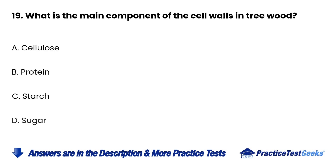Question 19: What is the main component of the cell walls in tree wood? a. Cellulose. b. Protein. c. Starch. d. Sugar.